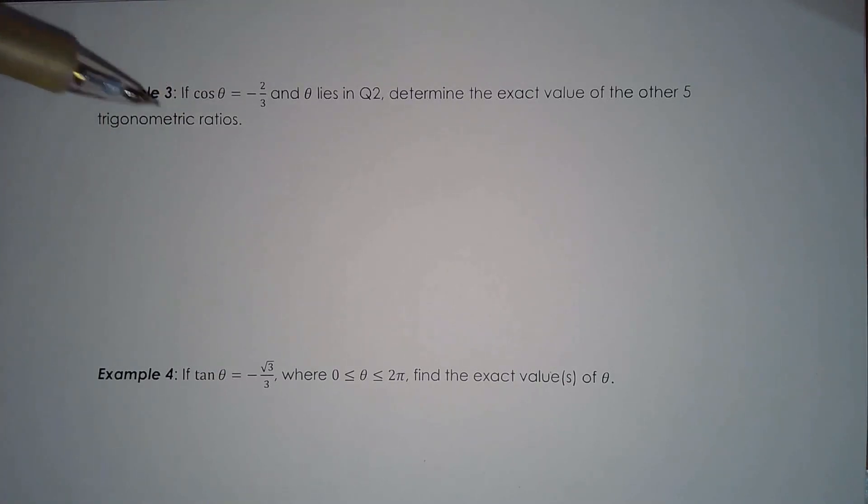Now this question, to be honest with you, is exactly the same as something you did in grade 11 because we don't even care what theta is. We're just trying to solve for the other five ratios. So it doesn't matter if we express theta in radians or degrees. We have the cosine ratio, so finding the sine ratio is just like what we did beforehand.